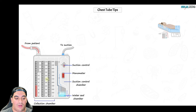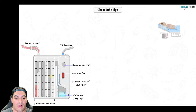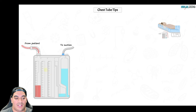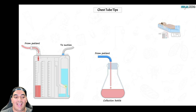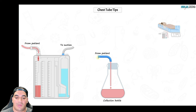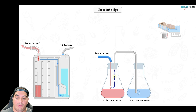The three-bottle system: the collection chamber collects fluid (blood in hemothorax, chyle in chylothorax, pus in empyema). The water seal chamber prevents air from flowing backward. Fluid from the collection chamber does not move into the water seal chamber; only air does. The air bubbles through the water and is effectively trapped, unable to return to the pleural cavity.